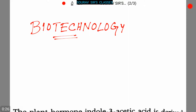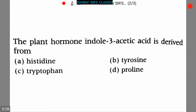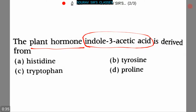Today our topic is biotechnology. Here is our first question: the plant hormone indole-3-acetic acid is derived from? Four options are given — option A: histidine, option B: tyrosine, option C: tryptophan, option D: proline.